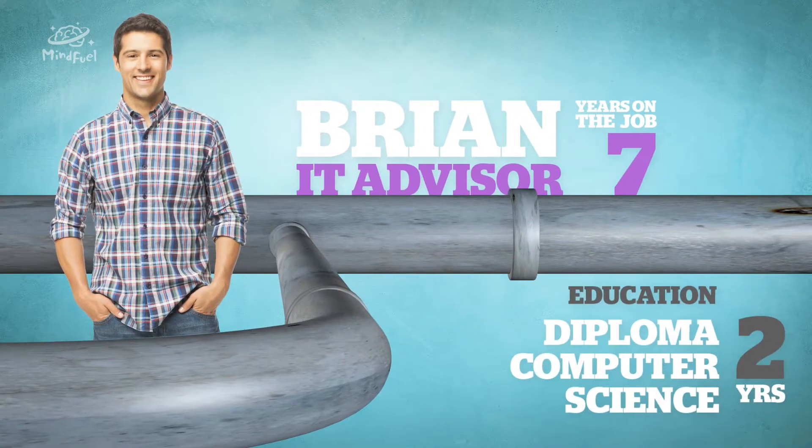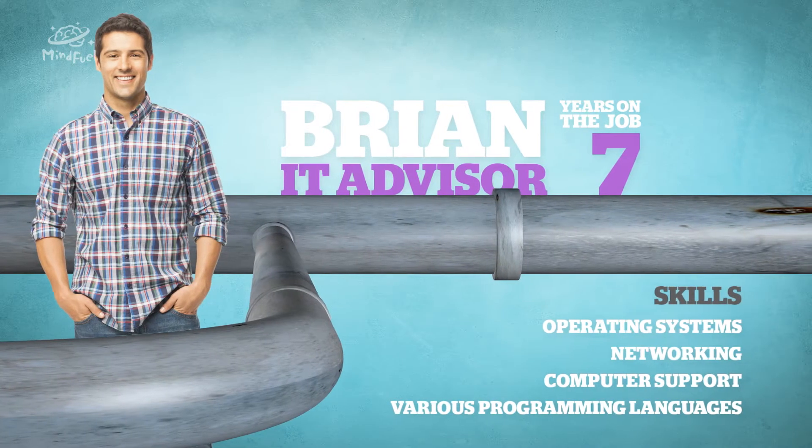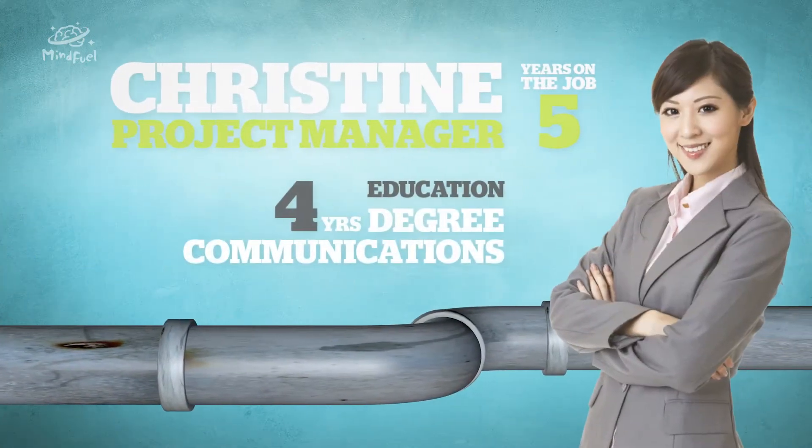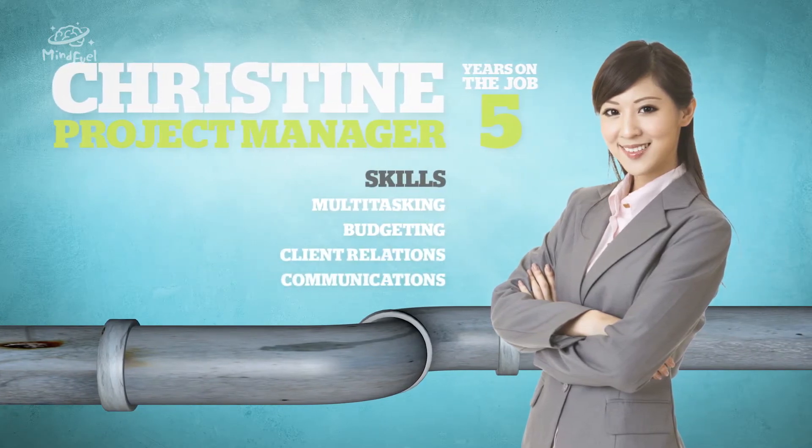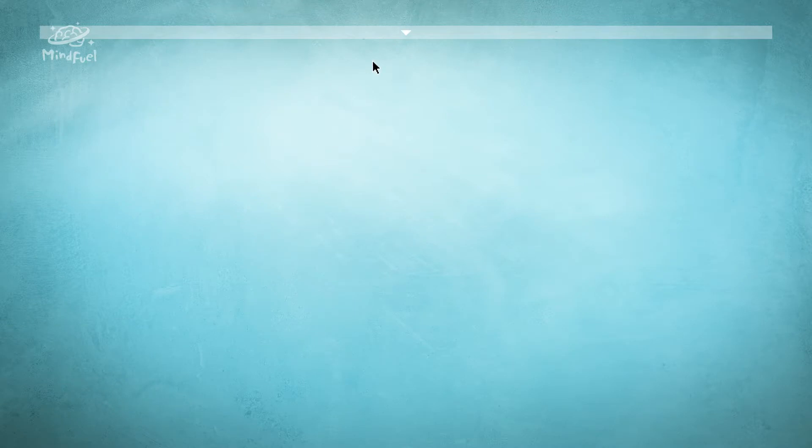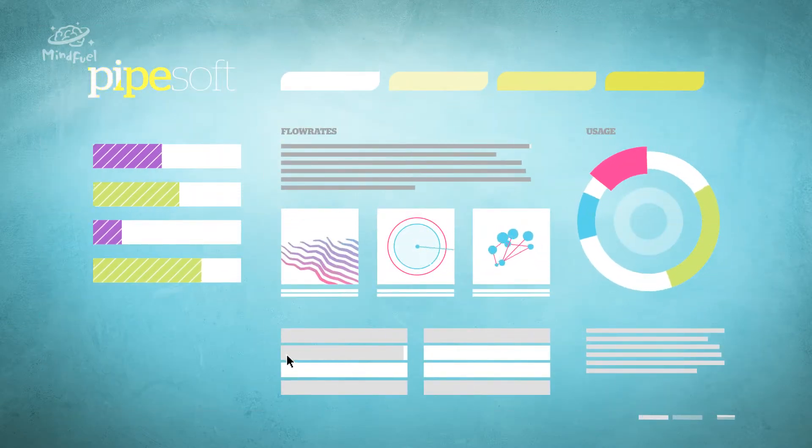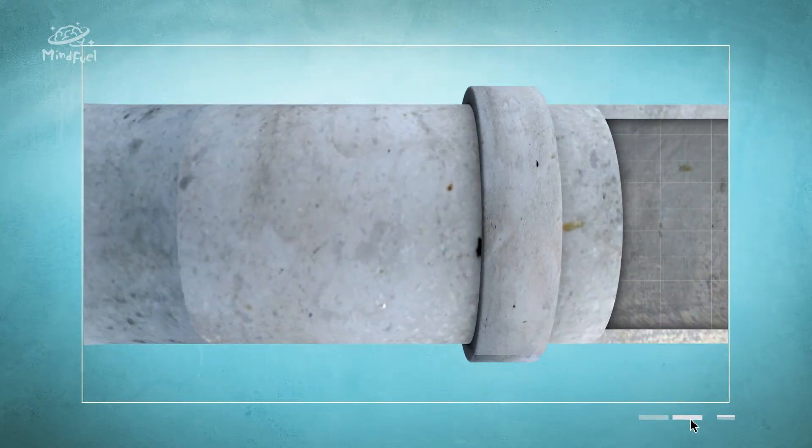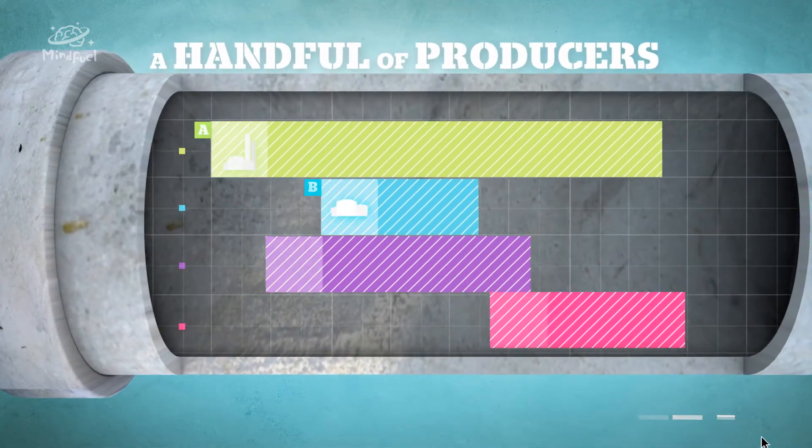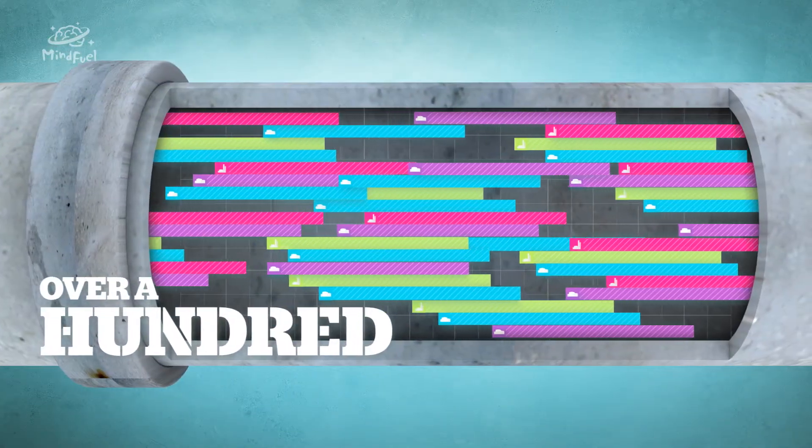I'm Brian. I have a diploma in computer science and I'm an IT advisor. And I'm Christine. I've been a project manager for five years. Brian and I work on a team that creates software systems that determine how pipelines operate. We're working on a project now that'll help a pipeline grow from serving a handful of producers to over a hundred.